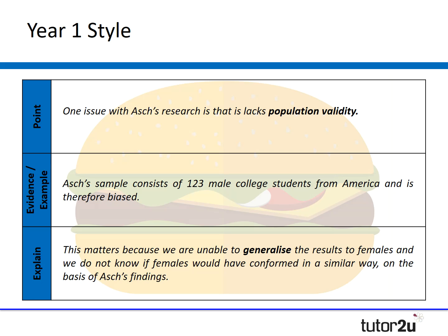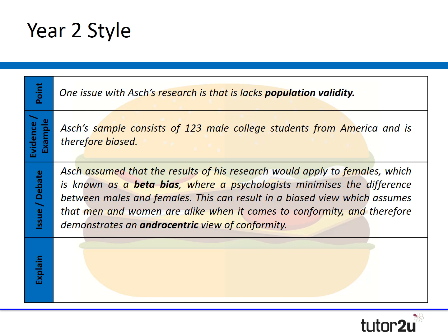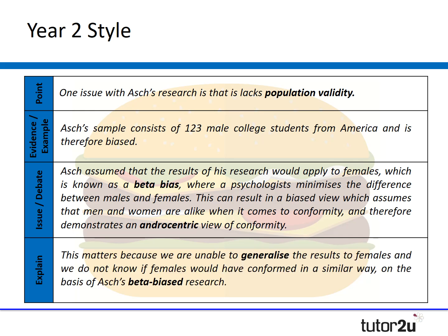What you can do in year two is keep most of that point but now embed your new knowledge of issues and debates to increase the depth of your evaluation. Keep your point and evidence the same, but then add: 'Asch assumed that the results of his research would apply to females, which is known as a beta bias, where psychologists minimise the differences between males and females.' Then: 'This can result in a biased view which assumes that men and women are alike when it comes to conformity and therefore demonstrates an androcentric view of conformity.' The explain part stays almost the same, but add 'beta-biased research' to reinforce your use of key terminology.